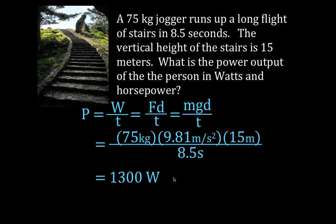So what about the horsepower? We're just going to convert horsepower as another unit for power. We know that one horsepower is 746 watts. Take 1,300, multiply that one, divided by 746, and you get that the power output of that person expressed in horsepower is 1.74 horsepower.